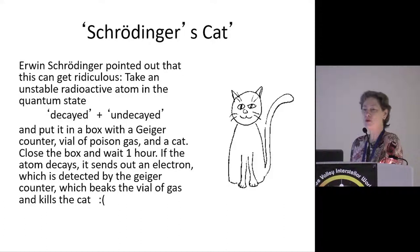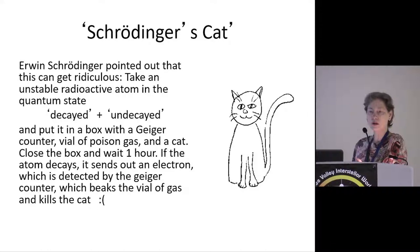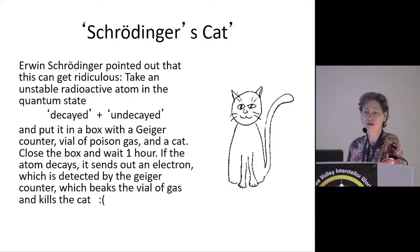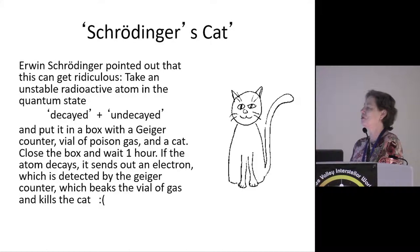Erwin Schrödinger, one of the brilliant founders of quantum theory, pointed out with this graphic illustration of a cat that it can get pretty ridiculous. You start with a quantum system — an unstable atom that can be described as being in a quantum superposition of decayed and undecayed, meaning there's no fact of the matter about whether it has sent out decay products or not. We model that by saying it's in a superposition. So we put this in a box with a Geiger counter, a vial of poison gas, and a cat. We close the box and wait for one hour.